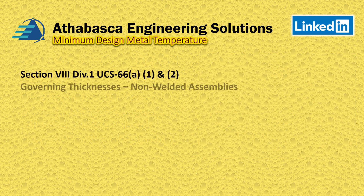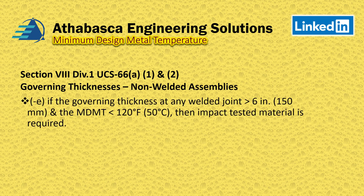Part E has to do with non-welded assemblies again. The rules for greater than six inches thickness — for castings and forgings — state that the MDMT must be less than 50 degrees centigrade; otherwise impact testing is required.